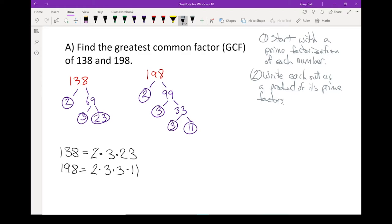Now that I've got it written out, and I've got it written out in order, our next step is look for common factors. Okay, when I look at this, both of them have a factor of 2. Both of them have a factor of 3. 198 has another factor of 3, but it doesn't have a partner in 138, so it is not a common factor.